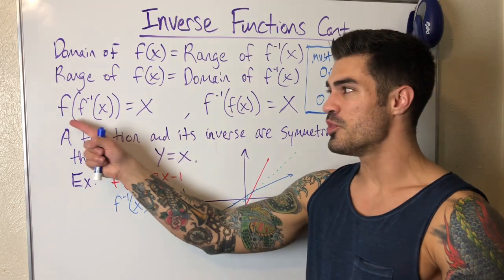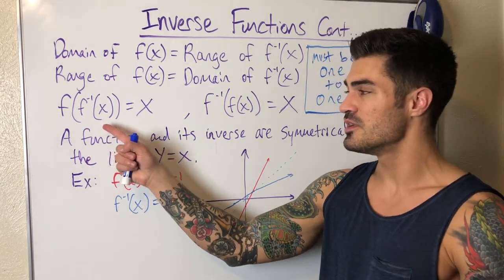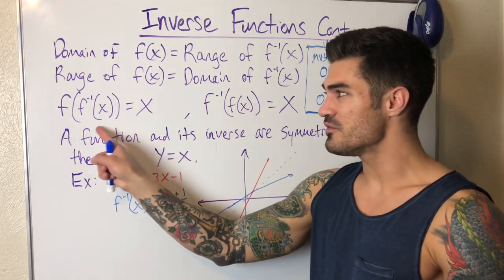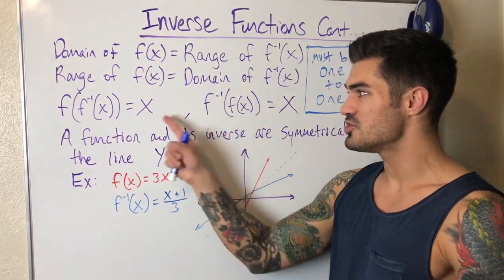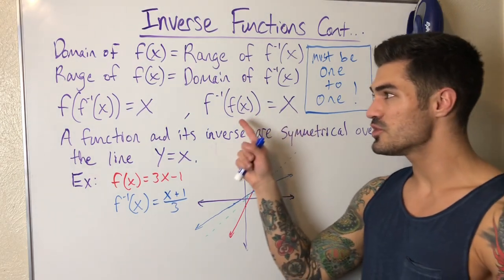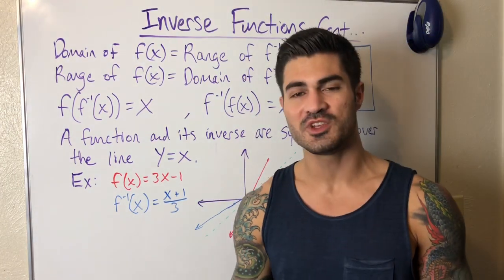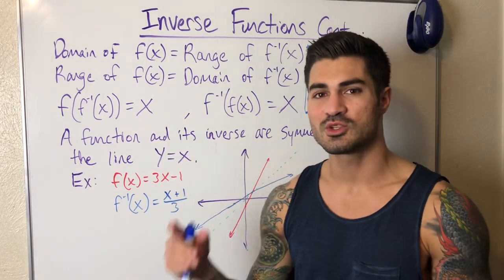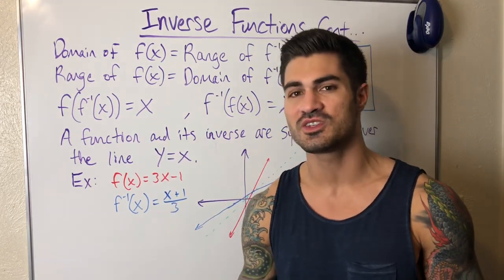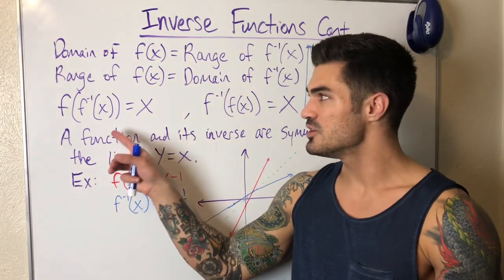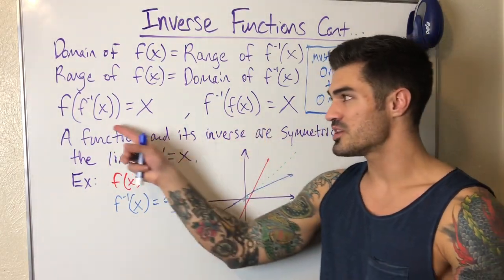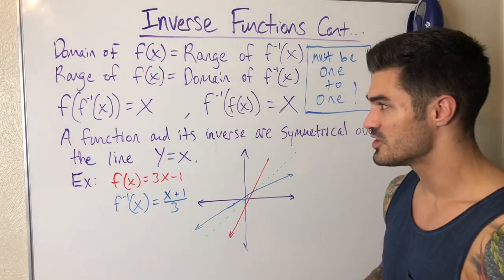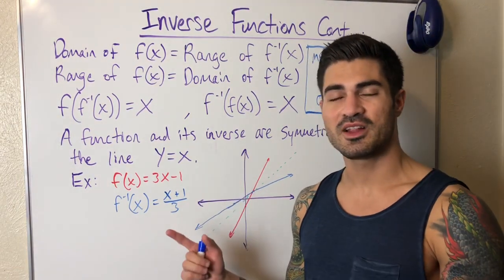We also learned about composite functions. If you compose a function and its inverse — whether the original is the inside function or the inverse is the inside function — either way you should get X. The inverse reverses whatever is being done to X, leaving just X. So if you need to verify that two functions are inverses of each other, you do both composite functions and check that you get X for both.